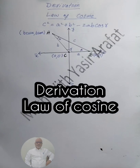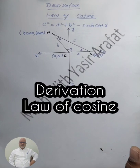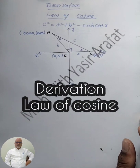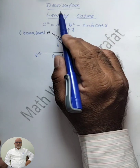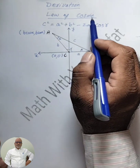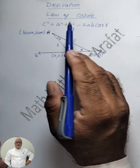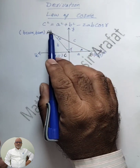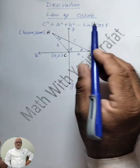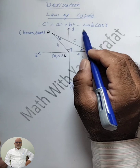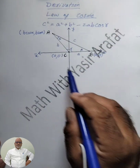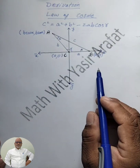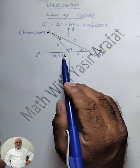Bismillah ar-Rahman ar-Rahim. My dear students, as-salamu alaykum. You are watching Math with Yasser Ar-Faad. Today we are going to discuss the derivation of the law of cosines, that is c squared equals a squared plus b squared minus 2ab cos gamma.